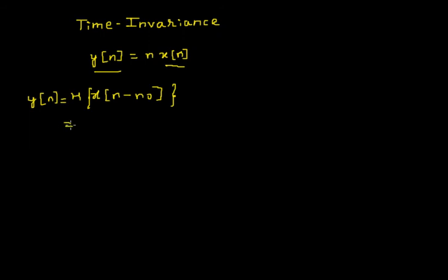The nature of the system here is that whatever we feed in, it multiplies with n and gives the output. So if we feed in x[n], it multiplies with n and gives y[n].